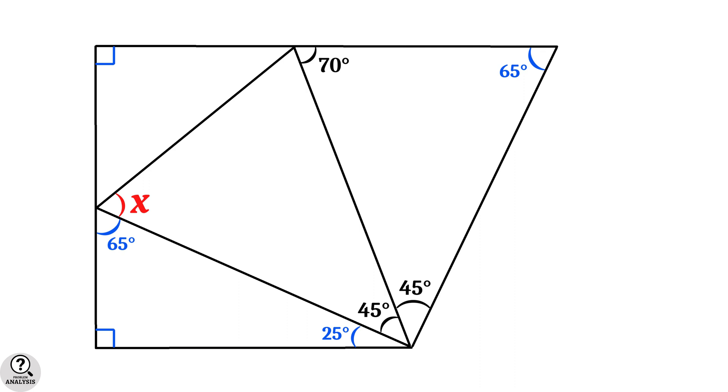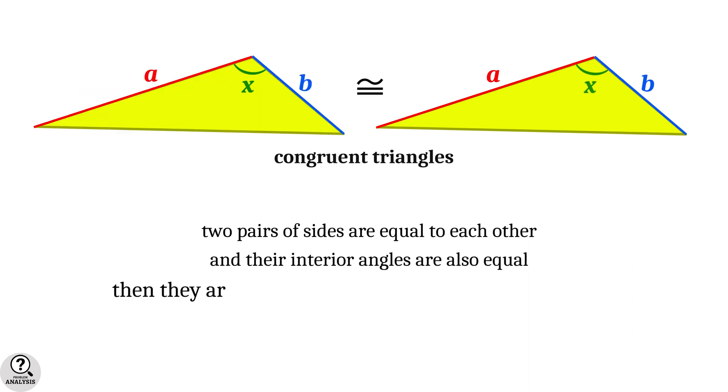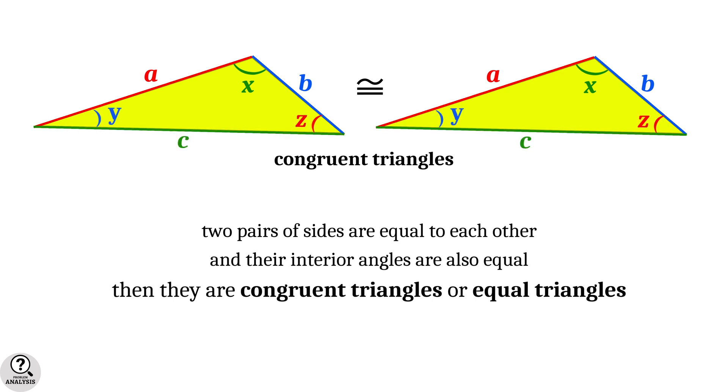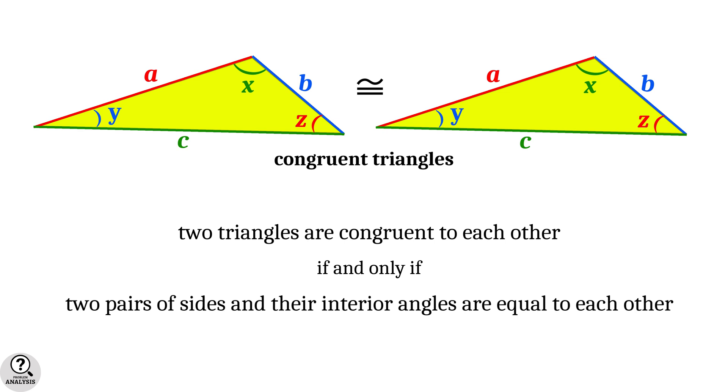To understand why we are doing this, we need to note one important fact about congruent triangles. Consider two triangles. Suppose that two pairs of sides are equal to each other and their interior angles are also equal. Then they are congruent triangles or equal triangles. That is, simply speaking, two triangles are congruent to each other if and only if two pairs of sides and their interior angles are equal to each other.